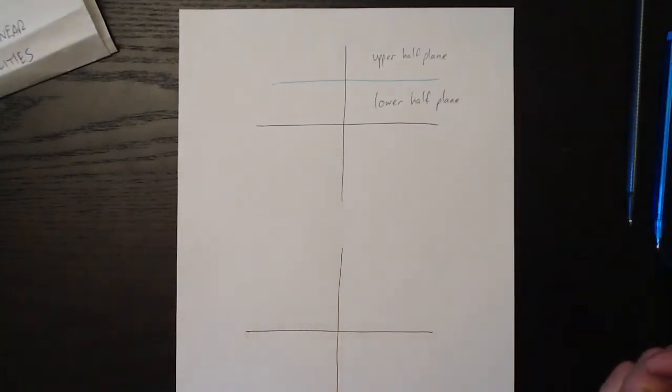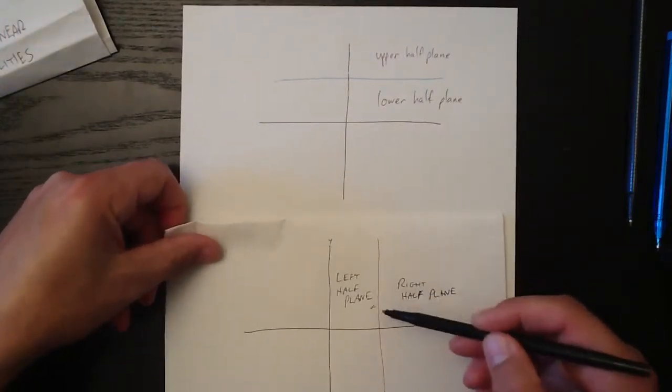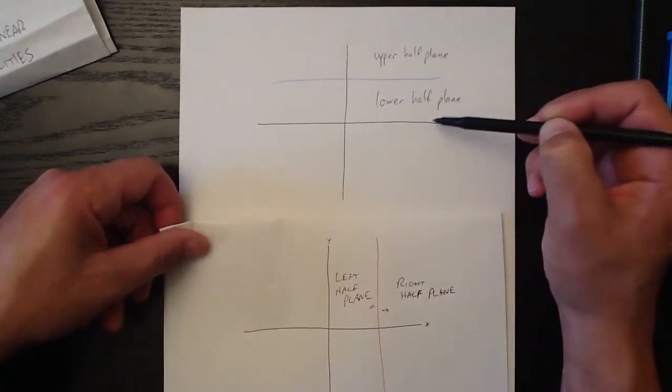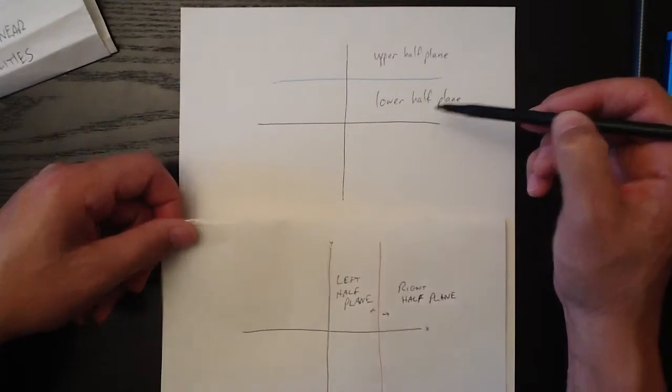Now everything's simple as long as we have one of these two things: either we have the vertical split where we have a left and a right, or we have the horizontal split where we have an upper and a lower, and we can talk about half planes all day long.